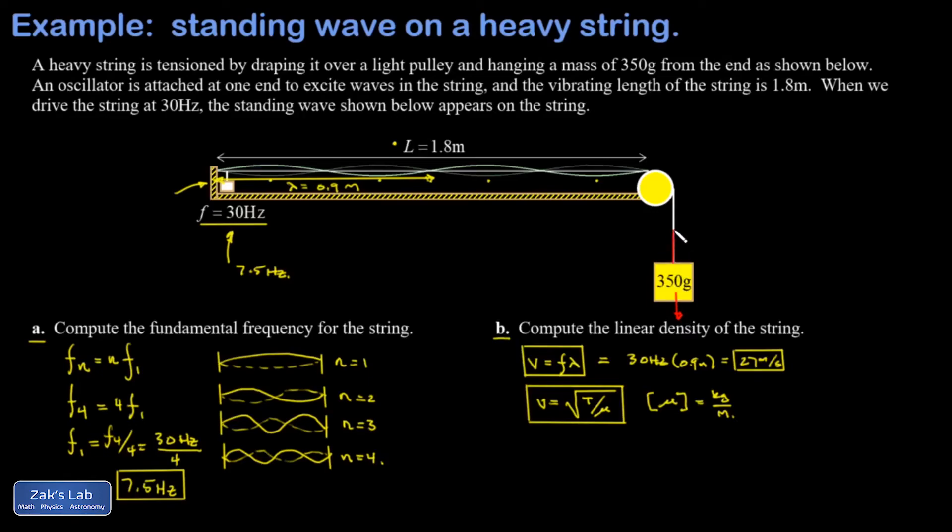If I compute mg, I need to put the mass in the right units, so 0.350 kilograms times 9.8 meters per second squared. When I run the numbers on this, I get 3.43 newtons.